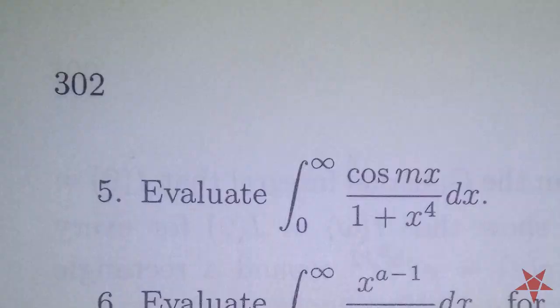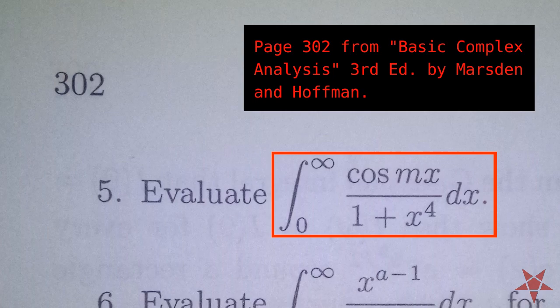Welcome back to Pentagram Prime, everyone. Today we will be looking at exercise number 5 on page 302 of Marsden and Hoffman, where we are asked to evaluate the real improper integral of cosine mx over 1 plus x to the 4th from 0 to infinity, and we will be doing this via residue theorem.